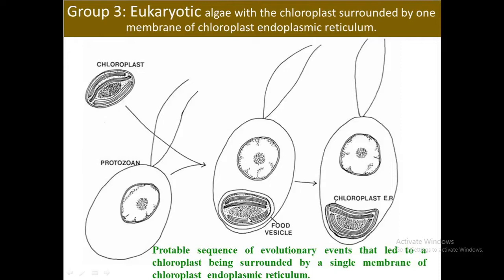The food vesicle membrane of the host became the single membrane of chloroplast endoplasmic reticulum surrounding the chloroplast. The plastids of euglenoids probably evolved by capturing a green algal chloroplast, as both have the same kind of pigment. Whereas the plastids of dinoflagellates and apicomplexans are probably derived from an endosymbiotic red algal chloroplast. Algae with chloroplast endoplasmic reticulum were selected for in evolution because of their ability to outcompete other algae in environments low in dissolved CO2.